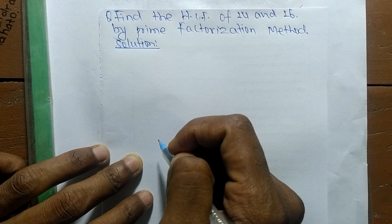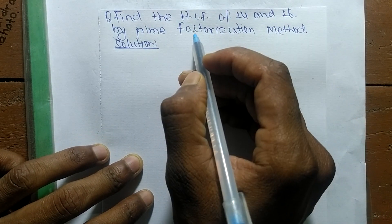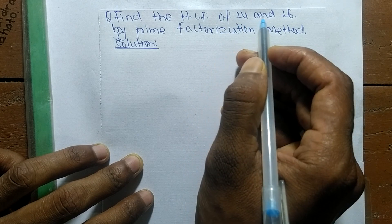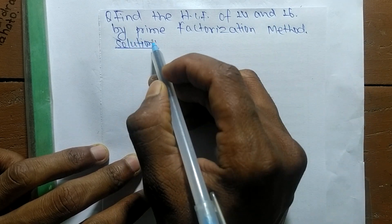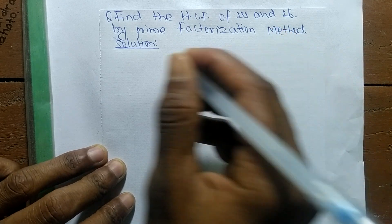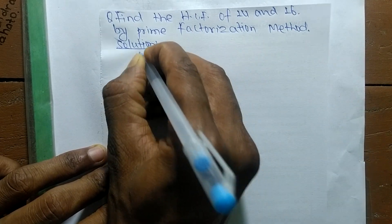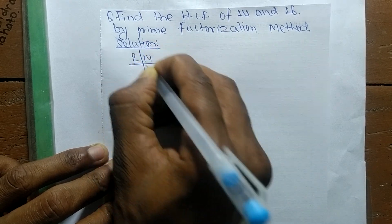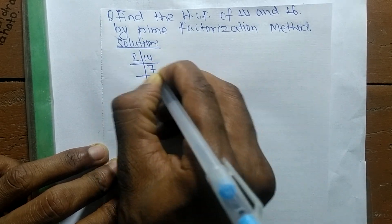So today in this video we shall learn to find the HCF of 14 and 16 by prime factorization method. First, we find out the prime factors of 14, so it is 2 times 7 equals 14, and 7 times 1 equals 7.